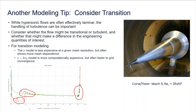We have a couple of transition models to consider. The gamma model is a little cheaper to run for a given mesh, but what we found when we did work for the recent AIAA transition modeling workshop was that the gamma model sometimes fools you into thinking you've got grid convergence when you really don't — increase mesh resolution just a little more and suddenly the transition changes completely. The gamma-RE-theta model is more expensive on a given mesh, but it seems to be more benign in its behavior. Something to think about if you're looking at one of these hypersonic cases.